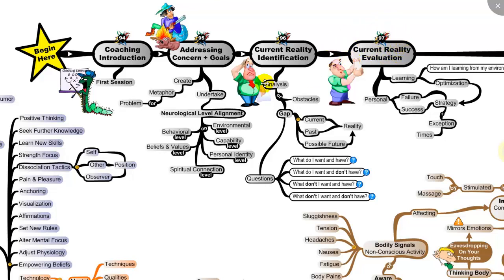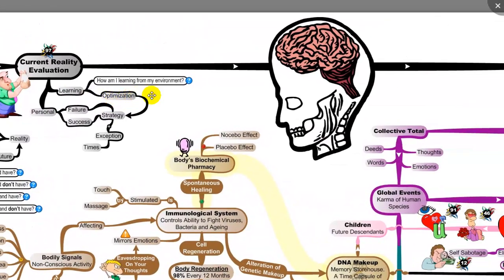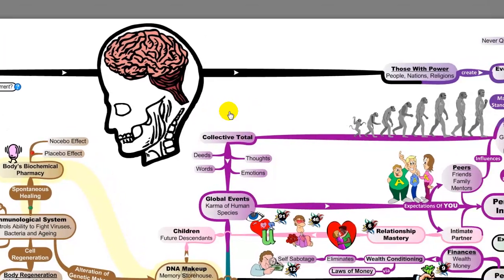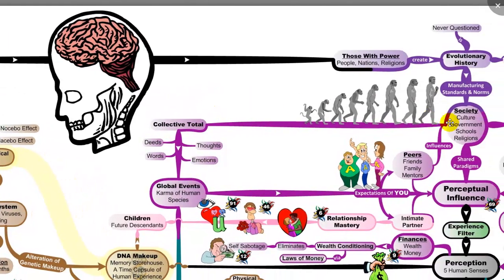As a coach we would start here, and even as a self-coaching tool we will go through these individual maps and try to identify where we are in our lives right now. As we move through here we go into the brain, into the human mind, and this is where we dig deep into the psychological level of human existence.